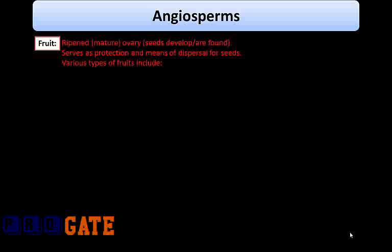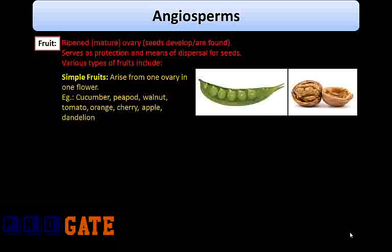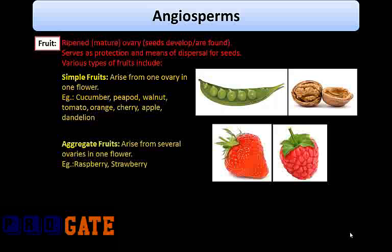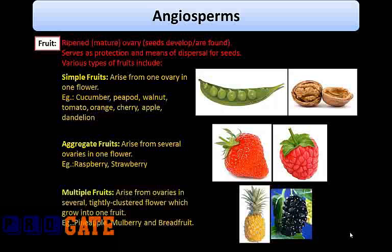Fruit is a ripened or mature ovary and serves as protection and a means of dispersal for seeds. Simple fruits arise from one ovary and one flower; examples include cucumber, pepper, walnut, tomato, orange, cherry, apple, dandelion, and maple helicopter. Aggregate fruits arise from several ovaries in one flower; examples include raspberry and strawberry. Multiple fruits arise from ovaries of several tightly clustered flowers that grow together into one fruit; examples include pineapple, mulberry, and breadfruit.